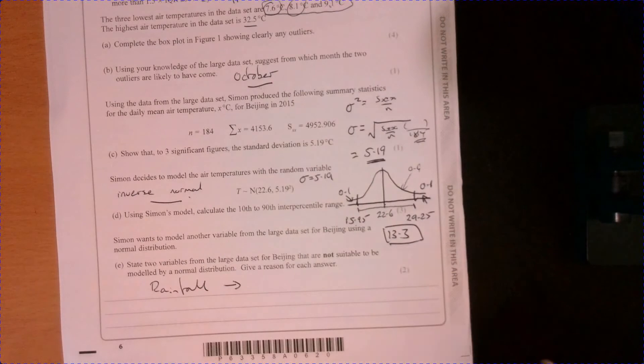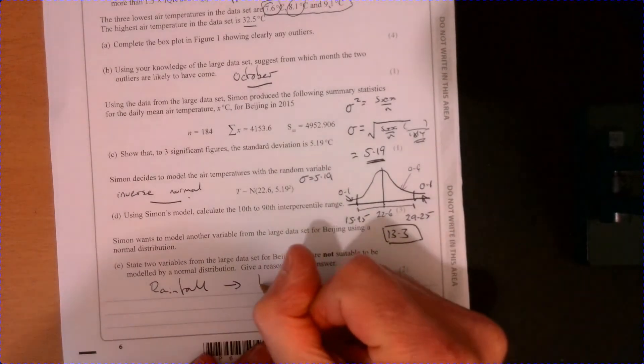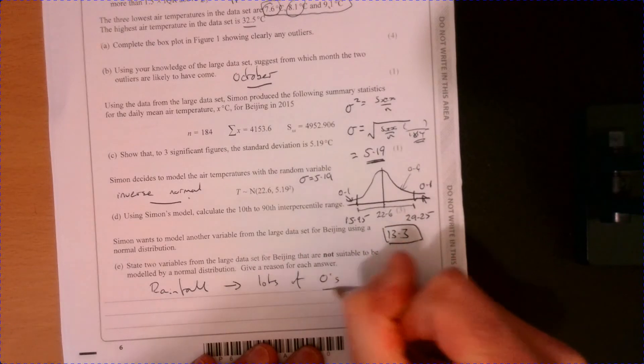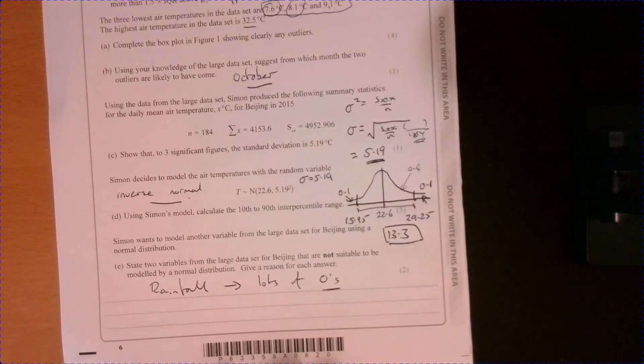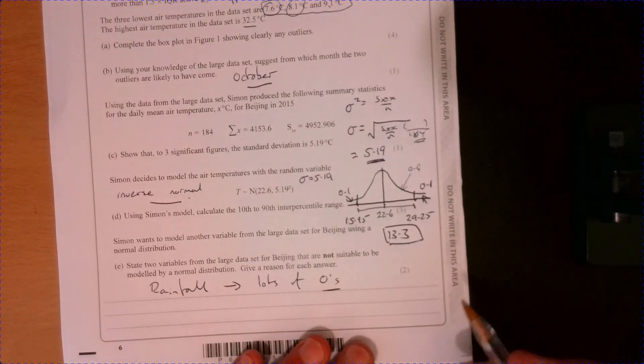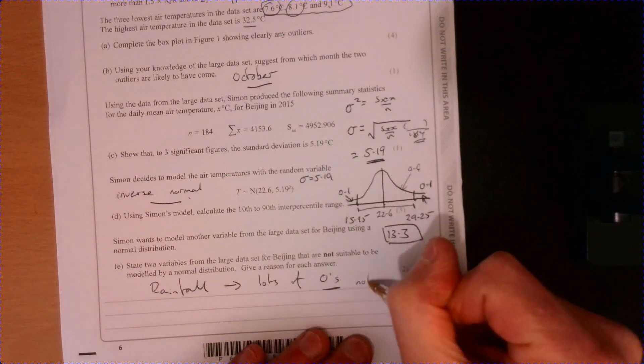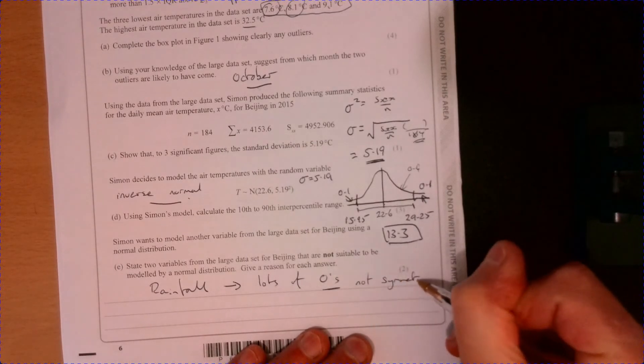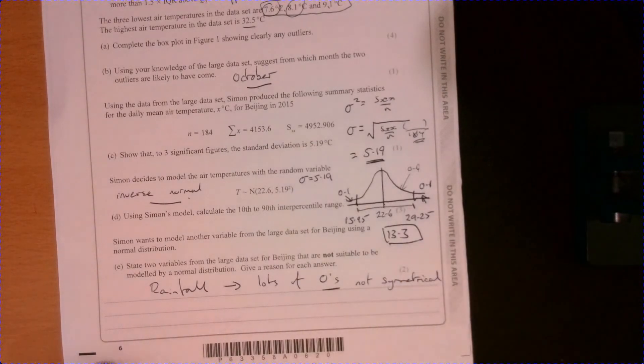And the reason for this, again, using knowledge of the data set, is that there's lots of zeros. There's loads of them. And sometimes you get the, also class's sum is trace. That just means it's basically zero. So it's not symmetrical.